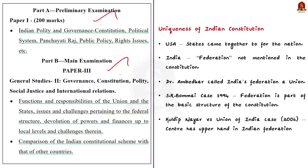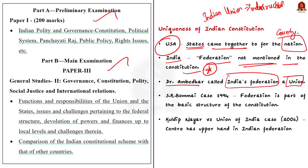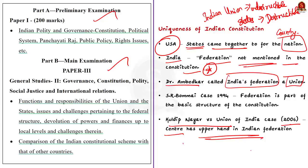Normally in a federal country, it is the states that come together to form the country — the classic example being the USA. In India, the word 'federation' is not even mentioned in the constitution; Dr. Ambedkar called India's federation a 'union,' as the Indian union is indestructible while states are destructible. Even though the Supreme Court in the S.R. Bommai case of 1994 held federalism to be part of the basic structure of the constitution, in the Kuldip Nair vs. Union of India case of 2006, the court held that in the Indian federation the center has the upper hand.